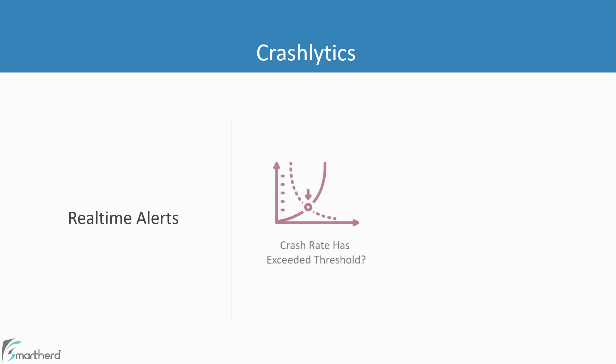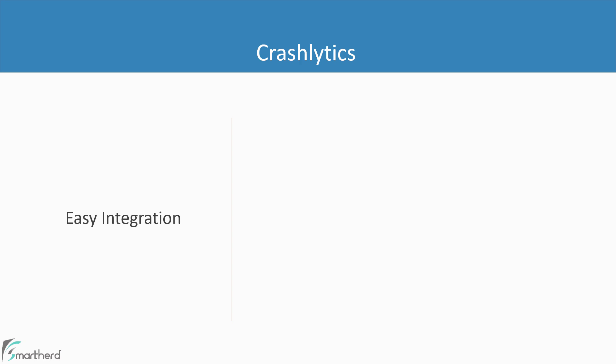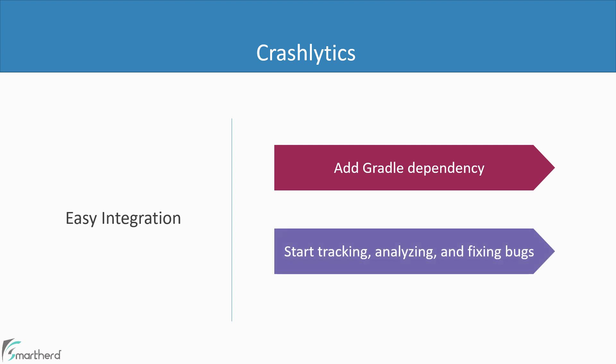Crashlytics also provides real-time alerts. In your Firebase console, you can set a threshold limit for a particular type of crash. If the number of crashes exceeds your defined threshold limit, Crashlytics will automatically send an email to your team so that the bug can be treated on an urgent basis. Using Crashlytics is super easy — the moment you add the Gradle dependency in your project, it will start sending bug reports to your Firebase console, and you can immediately start tracking, analyzing, and fixing potential bugs. That's all for Crashlytics.